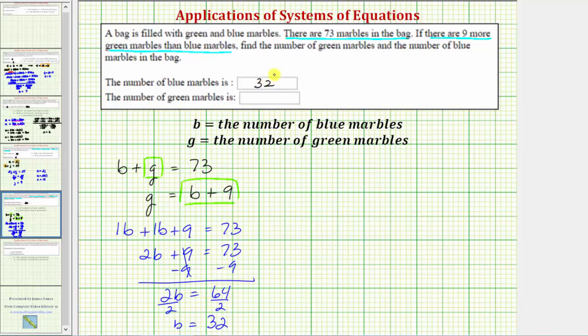To determine the number of green marbles, we substitute thirty-two for b in either of these equations. Let's use this equation that's already solved for g. Because g is equal to b plus nine, and we know b equals thirty-two, g is equal to thirty-two plus nine, which equals forty-one. So now we know there are forty-one green marbles.